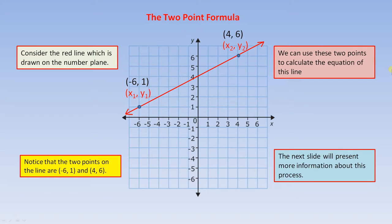The two-point formula. Consider the red line which is drawn on the number plane. Notice that the two points on the line are minus six one and four six. We can use these two points to calculate the equation of this line. The next slide will present more information about this process.